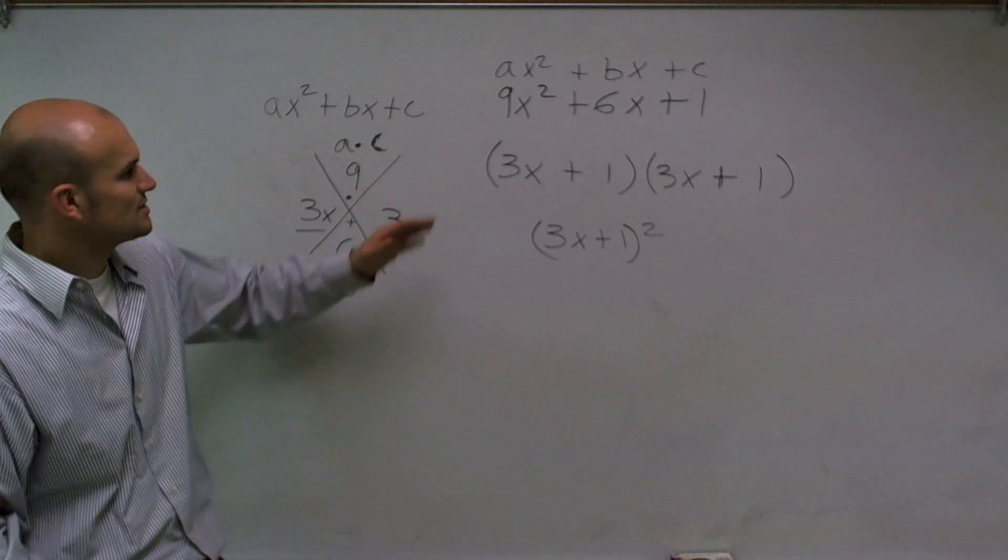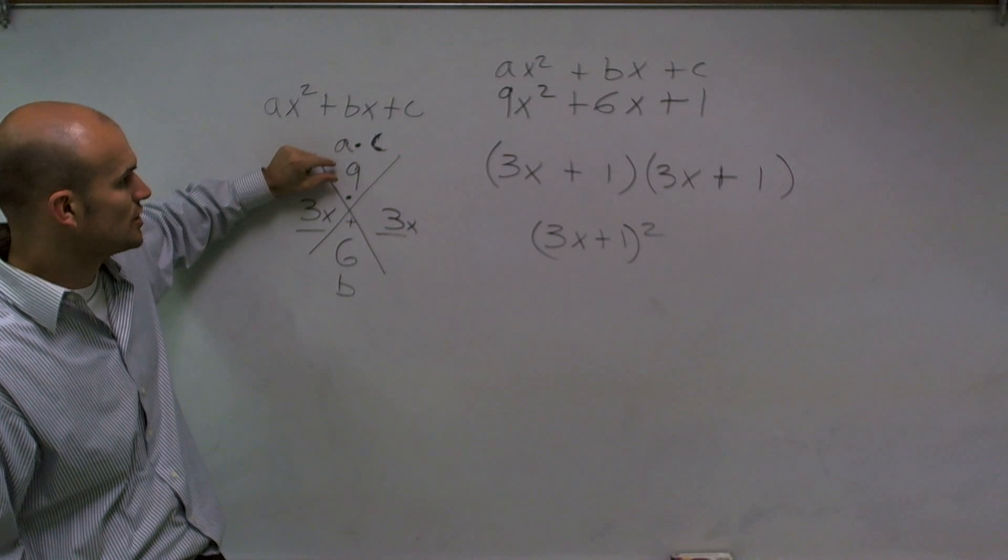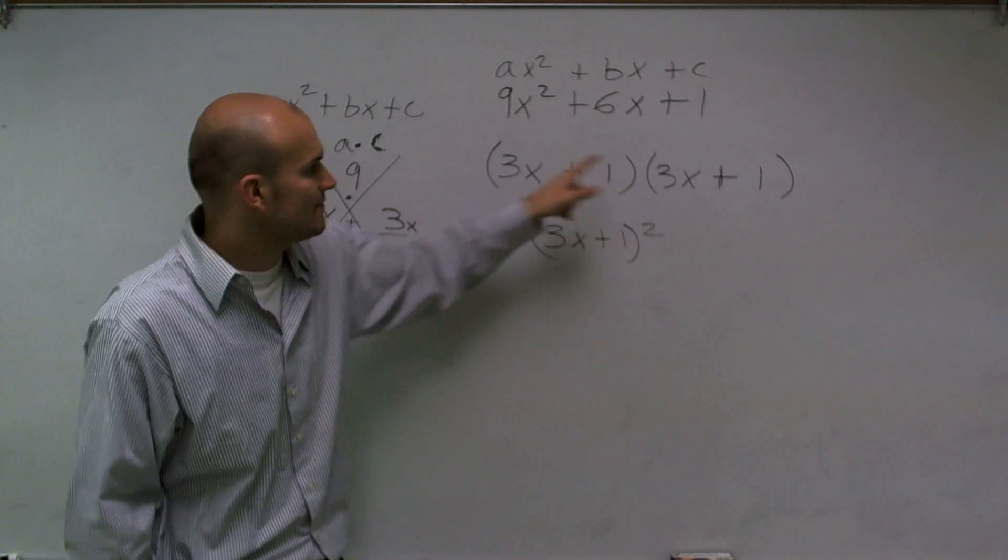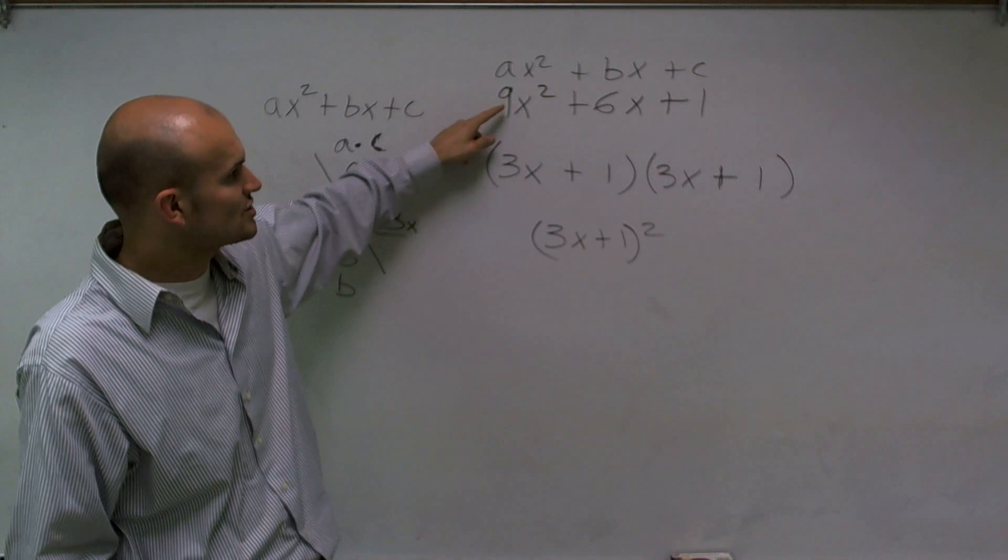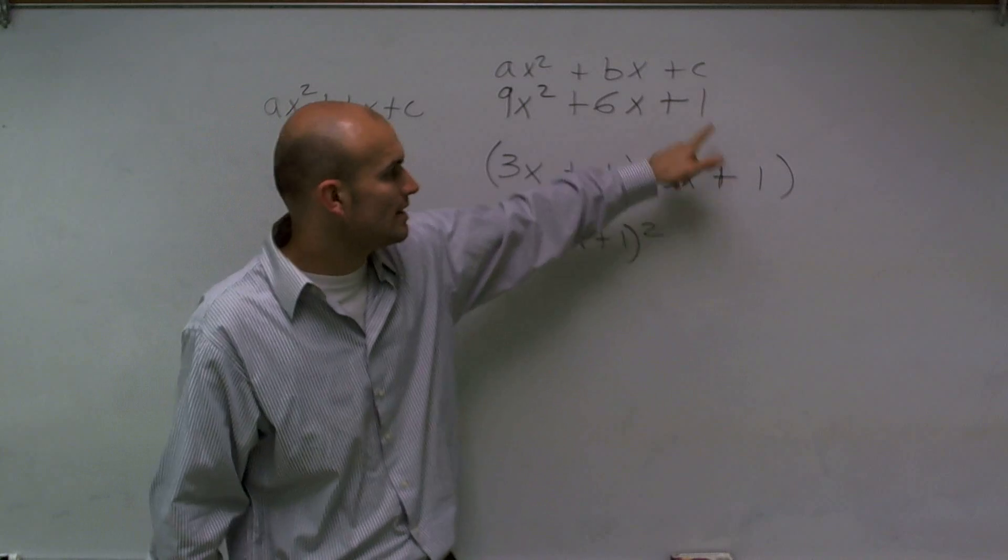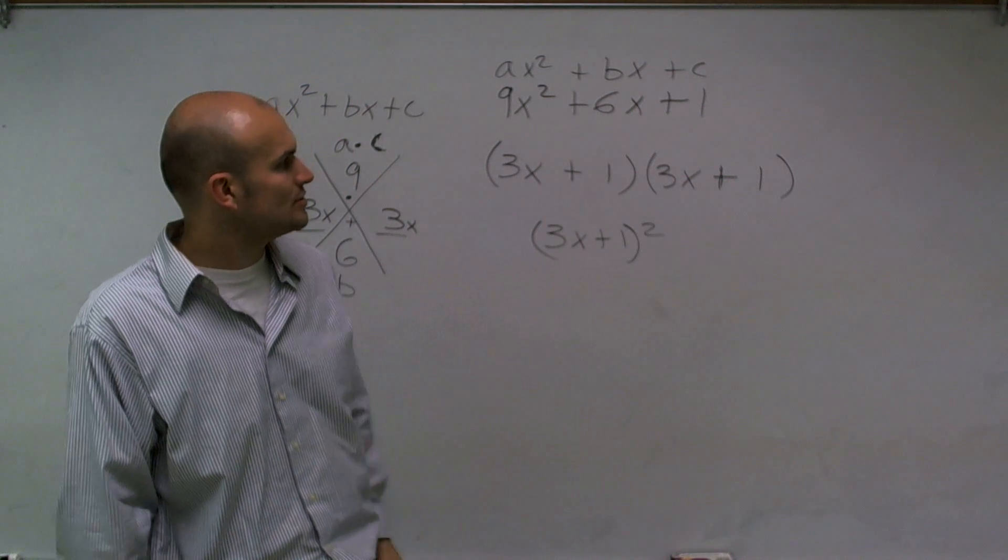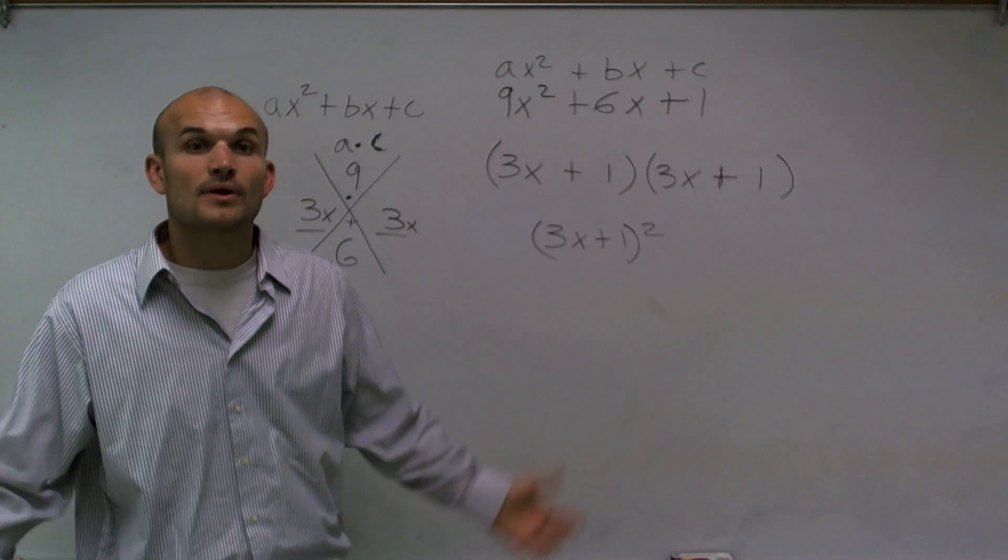So the main important thing is to use your diamond technique. Make sure if it's for my a times c where my a is my larger number than c, I can multiply 3x times 3x. If I check this by FOILing, 3x times 3x gives me 9x². 1 times 1 is going to give me 1. And then when I FOIL out my middle terms, they're also going to add up to 6x, and I'll reduce it down to (3x + 1)². All right, thank you.